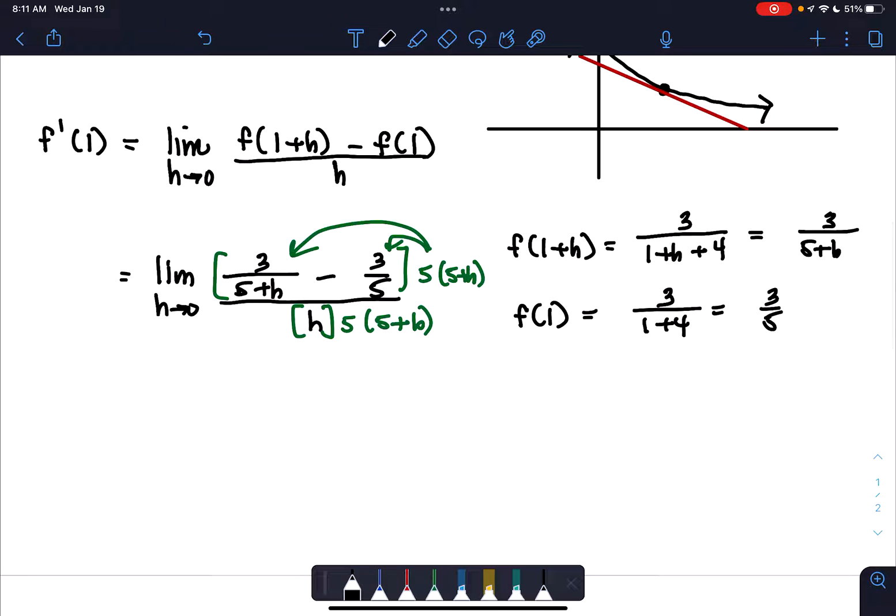So what we have now is limit h approaches 0. When we distribute 5 times 5 plus h to the first fraction, the 5 plus h is crossed out. So we have 3 times 5 minus. When we distribute the 5 times 5 plus h to the second fraction, the 5s cross out. And we have 3 times 5 plus h. And this is all over. Now, I'm going to leave the denominator in factored form.